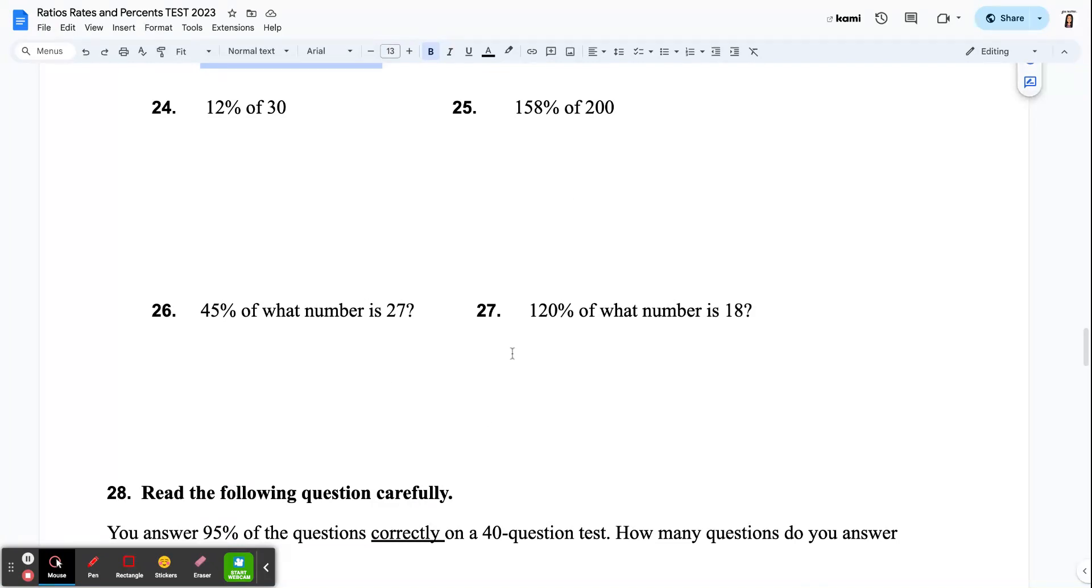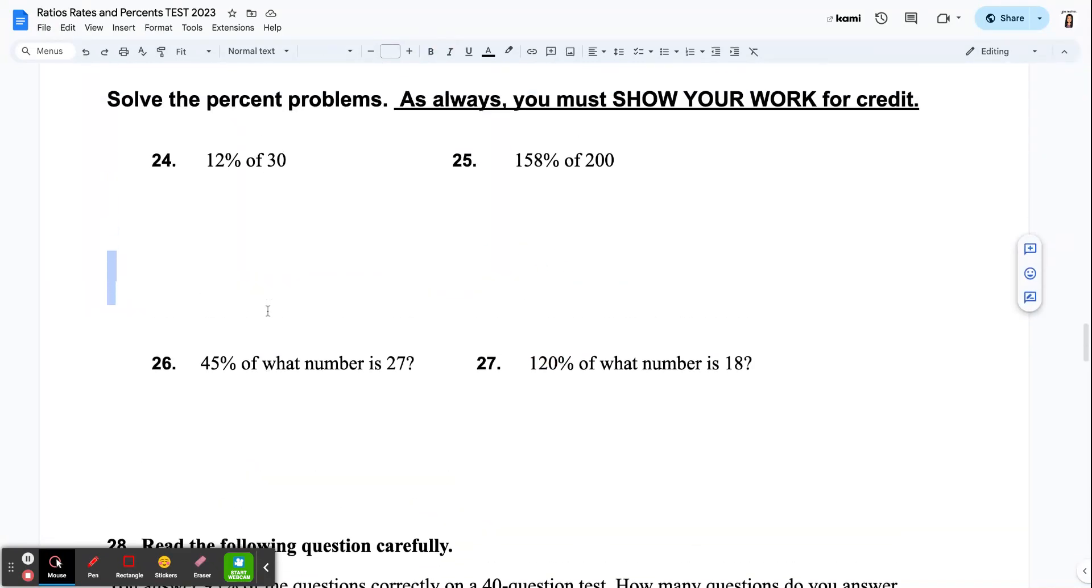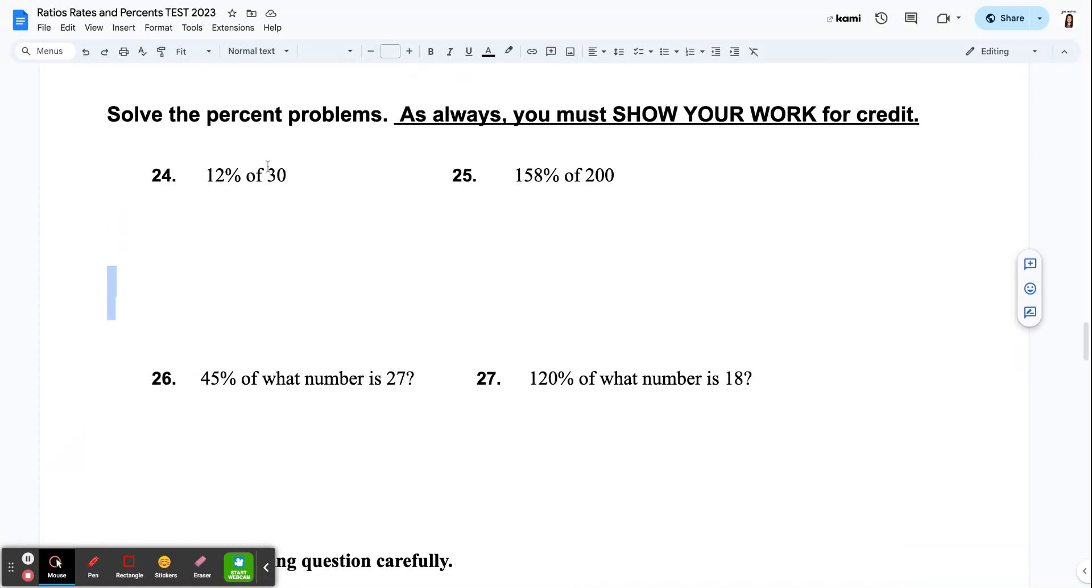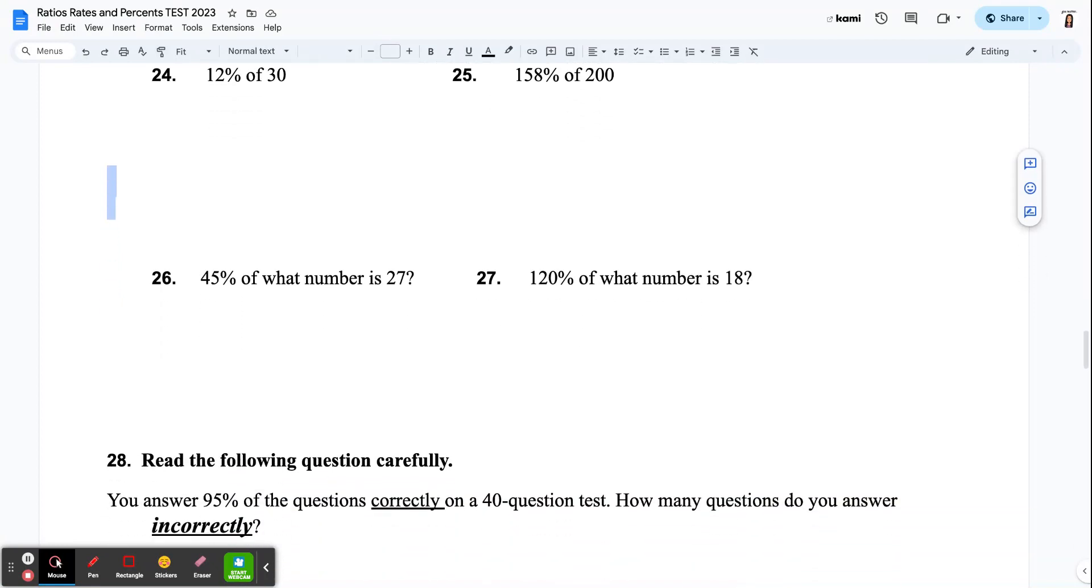You don't have to use my is over of. It is the pattern you're going to use in seventh and eighth grade. But if you can figure it out in a different way, and it's still correct, you guys can show me that here. So 12% of 30. What is 158% of 200? 45% of what number is 27? And 120% of what number is 18?